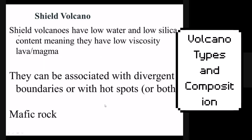Shield volcanoes tend to be made of mafic rocks and are also associated with divergent boundaries, like Iceland, or both a hotspot and a divergent boundary. They tend to have very low viscosity lava and magma, meaning it can flow easily. They don't really build up much pressure and go exploding.